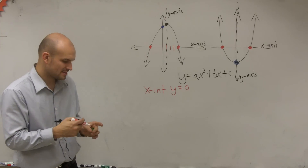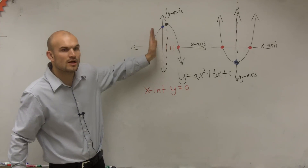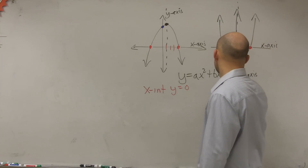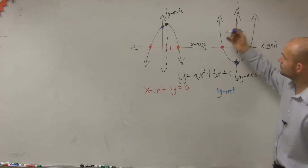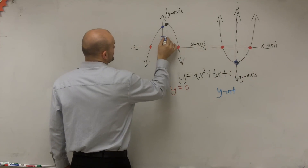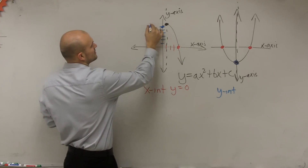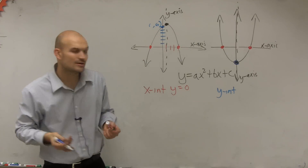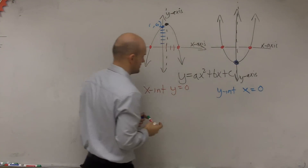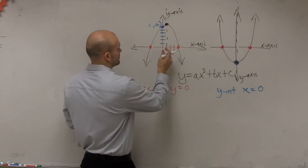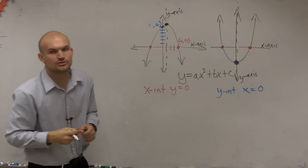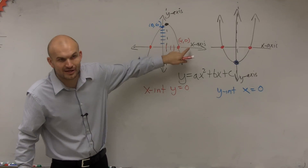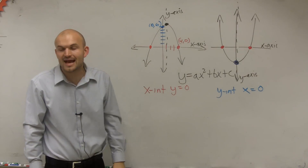Let's take a look at the blue points. The blue points are where the graph crosses the y-axis — we call those the y-intercept. And the y-intercept, looking at this point, 1, 2, 3, 4, 5, 6 — what is the x-value when the y-value is at 6? Zero. So x equals 0. When the graph crosses the y-axis, the x-value is 0.